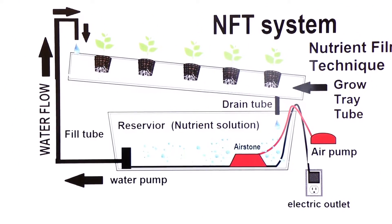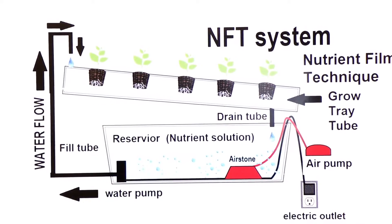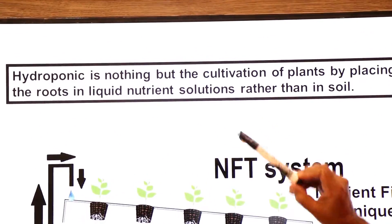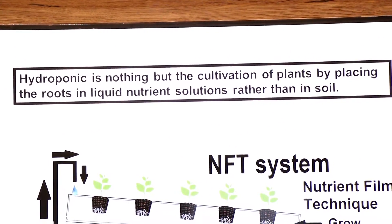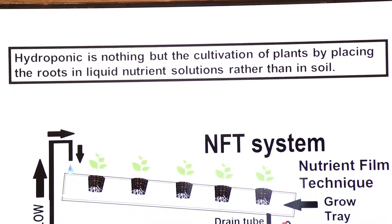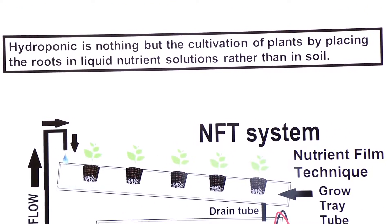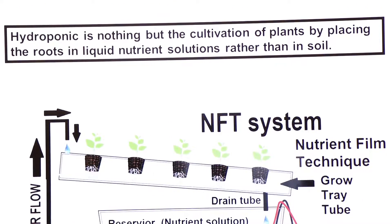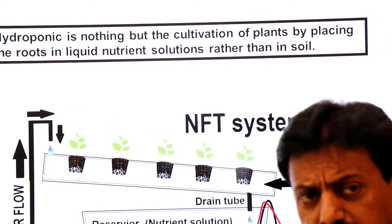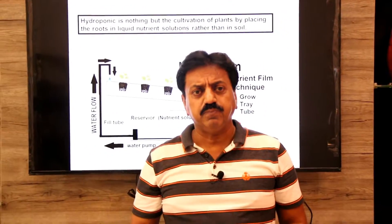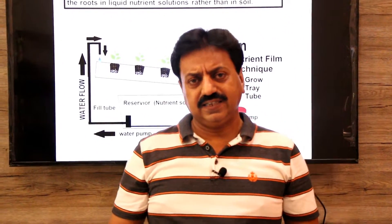In simple terms, what is hydroponics? Hydroponics is nothing but cultivation of plants by placing the roots in a liquid nutrient solution rather than in soil. You can also call it soilless culture.